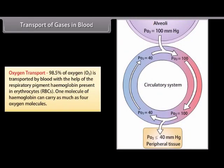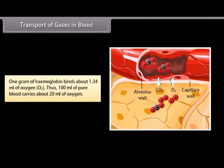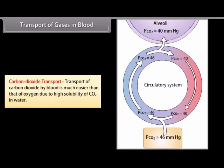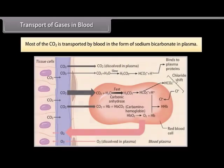98.5% of oxygen is transported by blood with the help of the respiratory pigment hemoglobin present in erythrocytes. One molecule of hemoglobin can carry as many as four oxygen molecules. One gram of hemoglobin binds about 1.34 ml of oxygen; thus 100 ml of pure blood carries about 20 ml of oxygen. Transport of carbon dioxide is much easier than that of oxygen due to the high solubility of CO2 in water. About 7% of CO2 is transported dissolved in plasma, 23% as carbaminohemoglobin, and 70% as bicarbonates. Most CO2 is transported in the form of sodium bicarbonate in plasma.